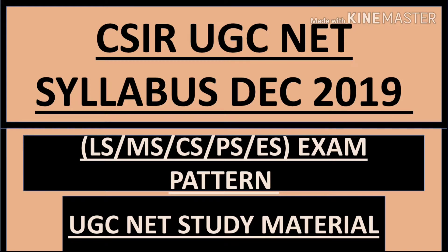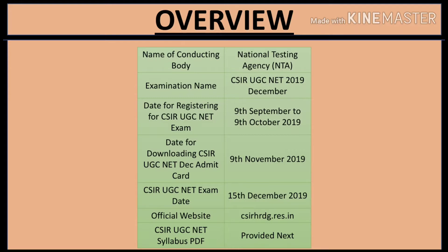The name of the conducting body is National Testing Agency, in short NTA. The examination name is CSIR UGC NET 2019 December. The date for registering for the exam is 9th September to 9th October 2019. The date for downloading the CSIR UGC NET December admit card is 9th November 2019. The exam date is 15th December. The official website is csirHRDG.res.in.